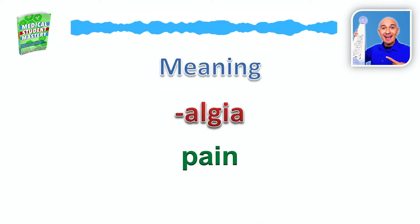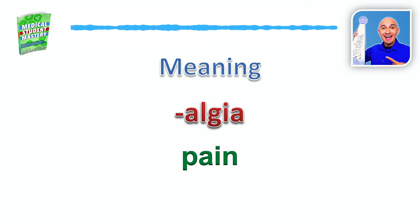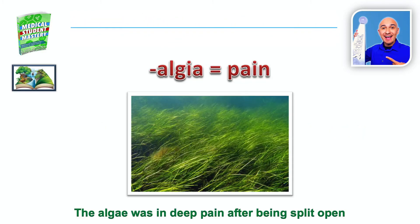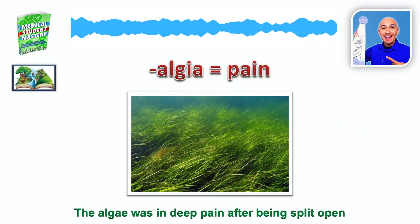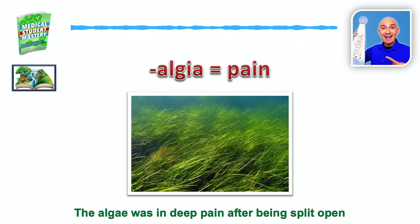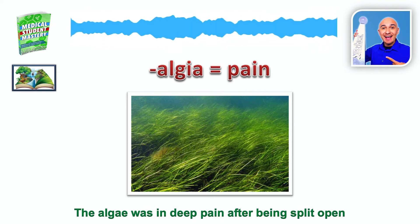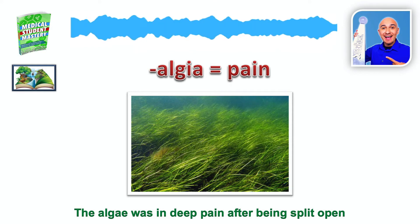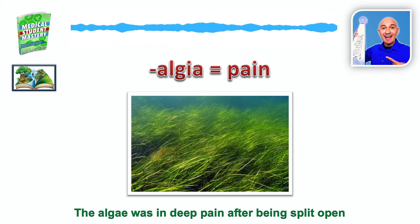The first suffix is -algia, and that means pain. The word used for this one is epigastralgia, which means pain in the epigastric region. The story that I would create to help me memorize what -algia means is I would think of algae as my picture association for algia. So the algae was in deep pain after being split open.